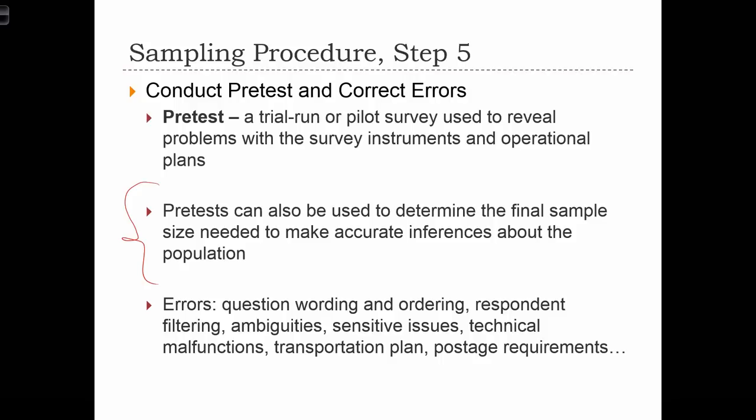The pretest is also used to find errors — we might have errors in the wording or ordering of our questions. For example, we might find a higher level of response bias if we ask personal questions up front in our survey. Typically in survey design, we're more likely to get truthful responses when we ask personal questions later on. Asking about someone's income is often the very last thing in a survey. We're more likely to be successful starting with less sensitive questions like gender, household size, or marital status, and then, once we've built rapport with the respondent, moving on to more personal questions about social values or income levels.